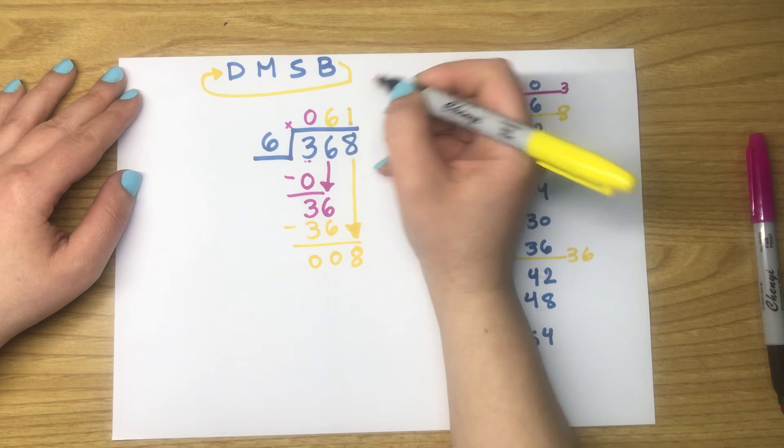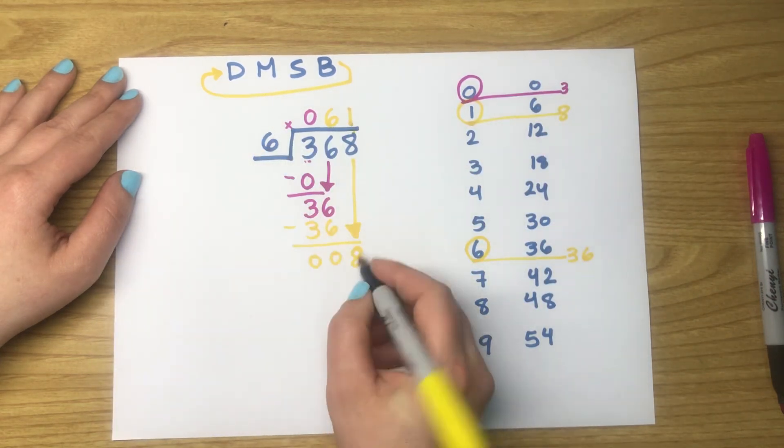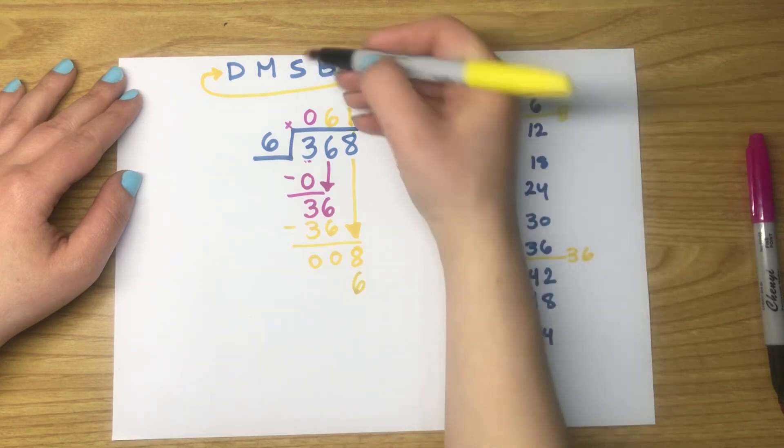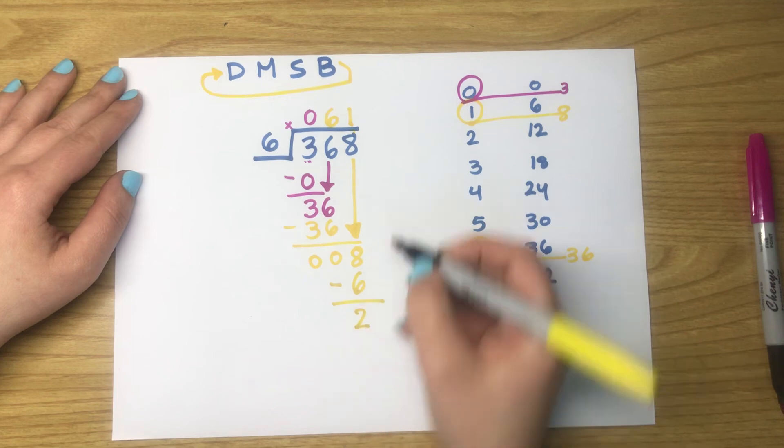Multiply: 6 times 1 equals 6. Subtract: 8 take away 6 equals 2. Nothing to bring down. We are done.